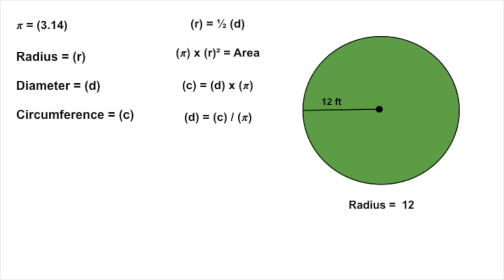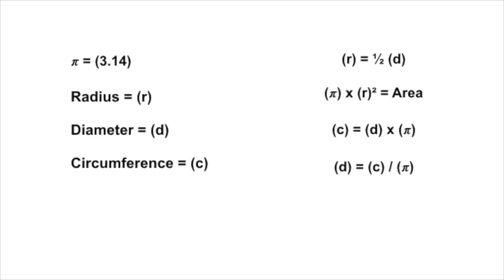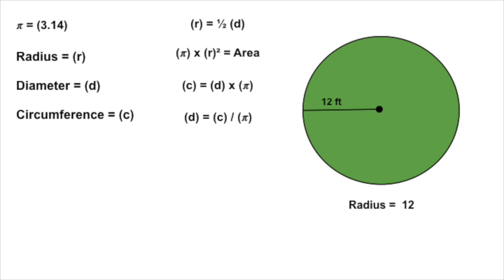Now before you hit pause and do the math, let's review the formulas quickly. Area is pi r squared — pi times the square of the radius. Diameter is 2 times the radius. The circumference is the diameter times pi, 3.14. Go ahead and hit pause to give yourself a few minutes to figure this one out, and then hit play when you're ready to resume.